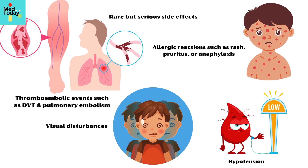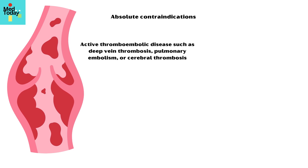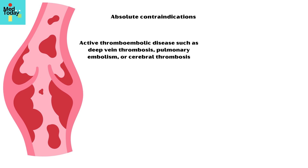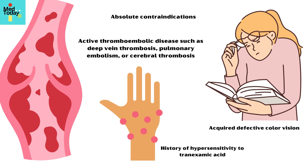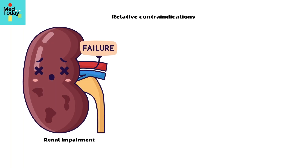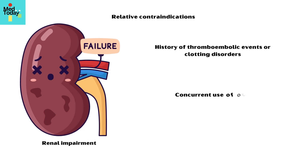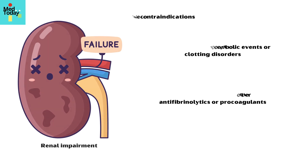Absolute contraindications for the use of tranexamic acid include active thromboembolic disease such as deep vein thrombosis, pulmonary embolism, or cerebral thrombosis, acquired defective color vision, and history of hypersensitivity to tranexamic acid. Relative contraindications include renal impairment, history of thromboembolic events or clotting disorders, and concurrent use of other antifibrinolytics or procoagulants.